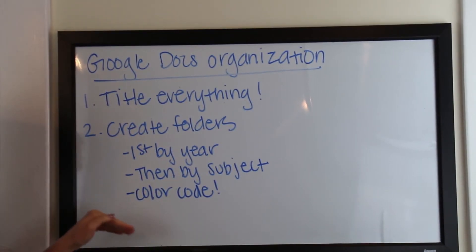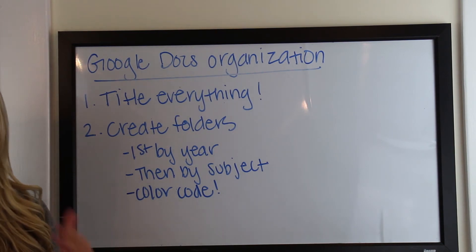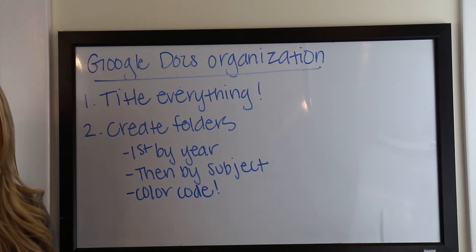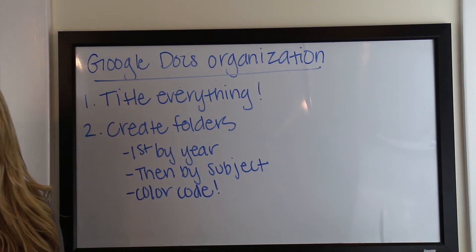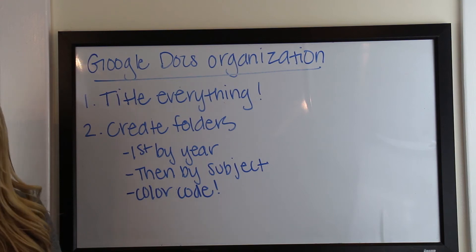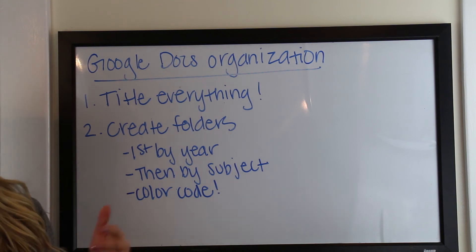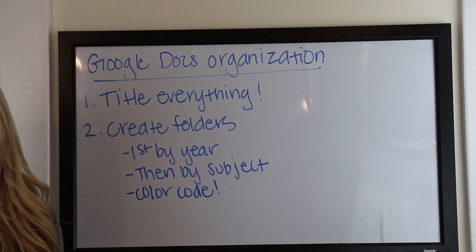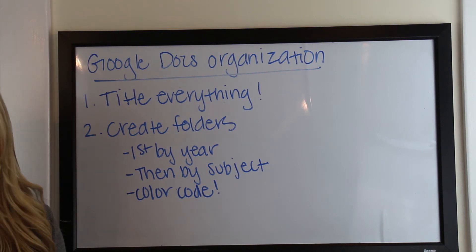The next thing you're going to want to do is organize by subject. Go into that year folder and create a subject folder for each different class that you have — English, history, bio, etc. Color code these folders so that they're really easily identifiable when you're trying to drag and drop documents into them and you don't have to think about it. Pink is always bio and your brain is going to remember that. You can just drag and drop any bio homework or assignments into that folder quickly and easily.